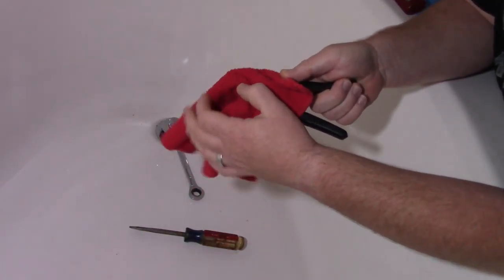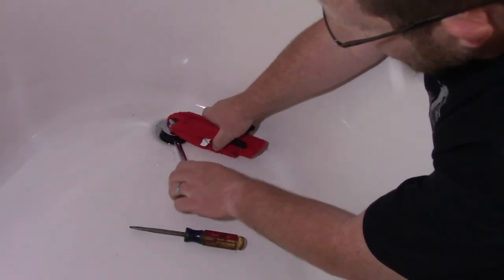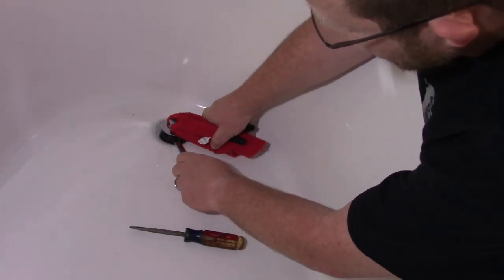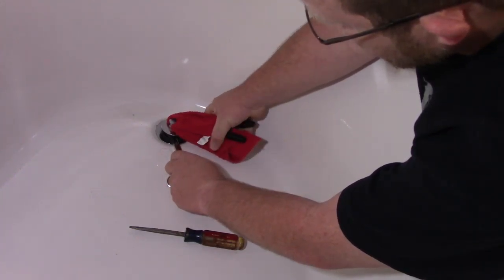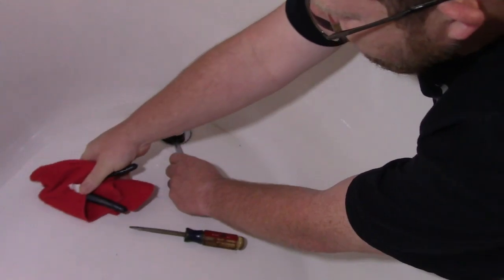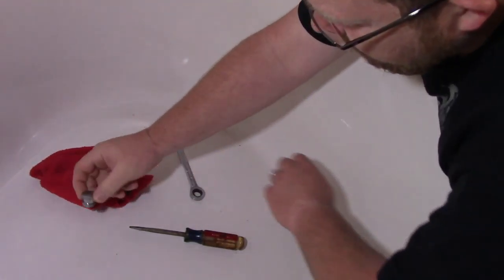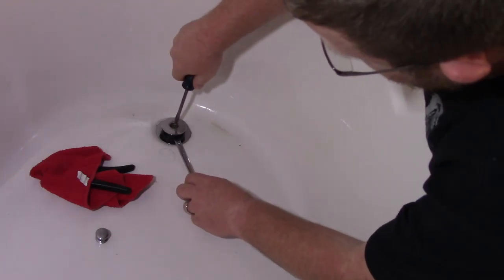Put it like so. Now what you're going to do is come down here, take the nine sixteenths, move this around until you find where the nine sixteenths locks on, and then you're going to just slowly twist it until you feel it loosen.